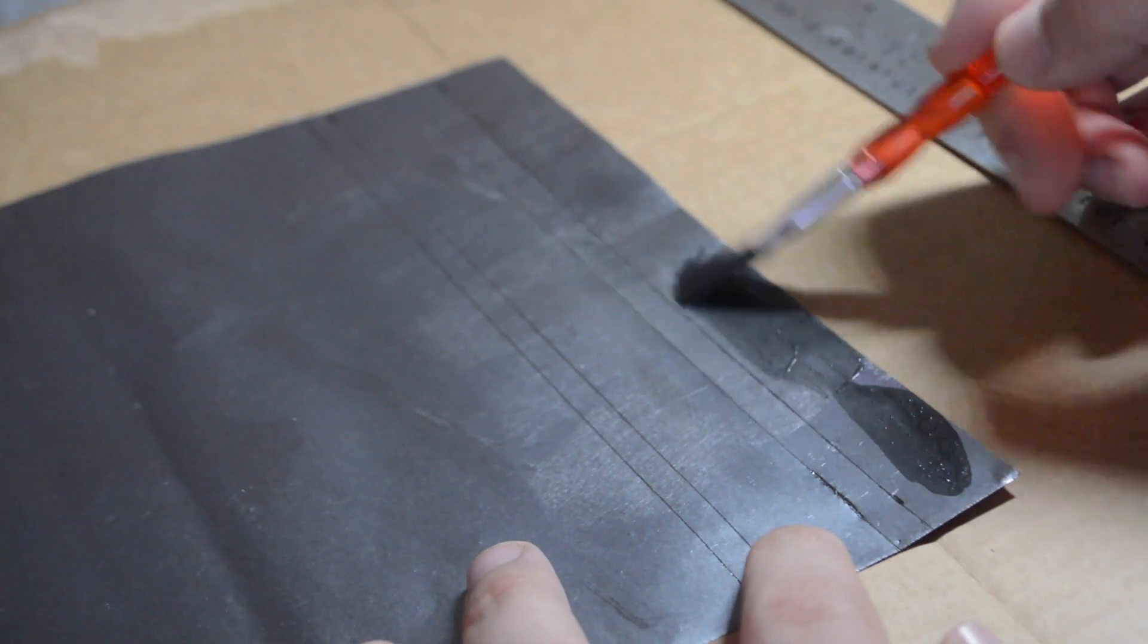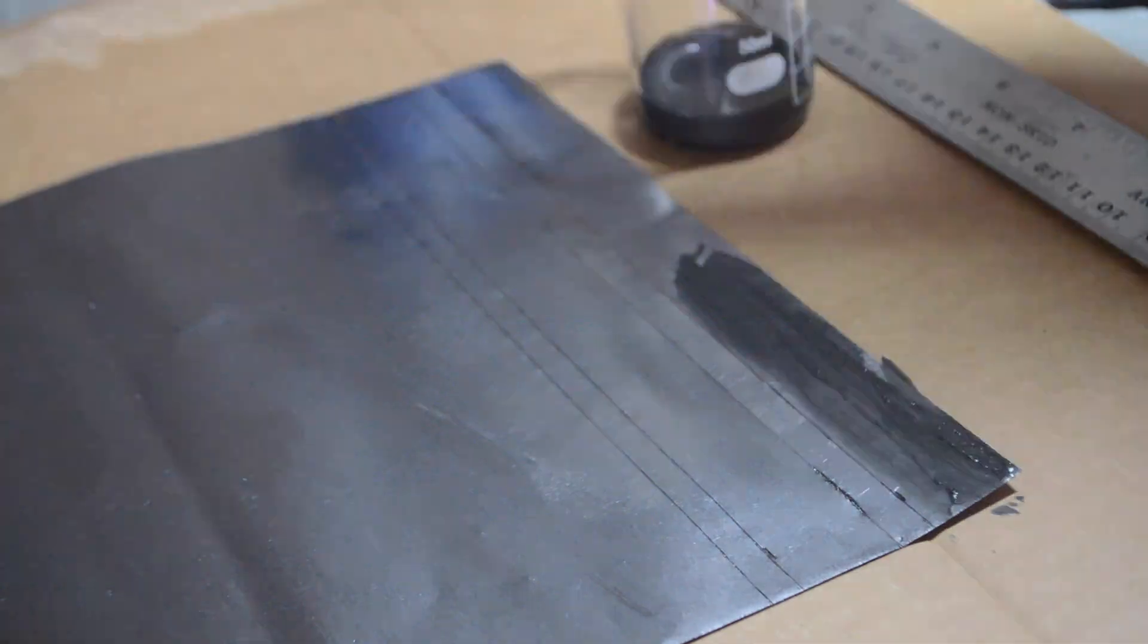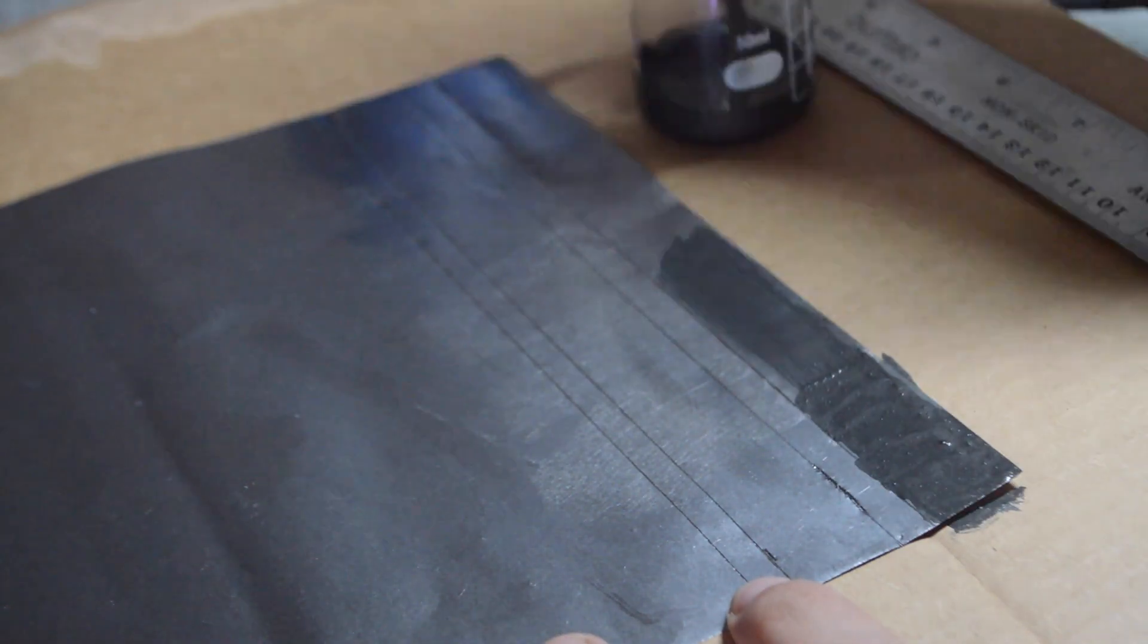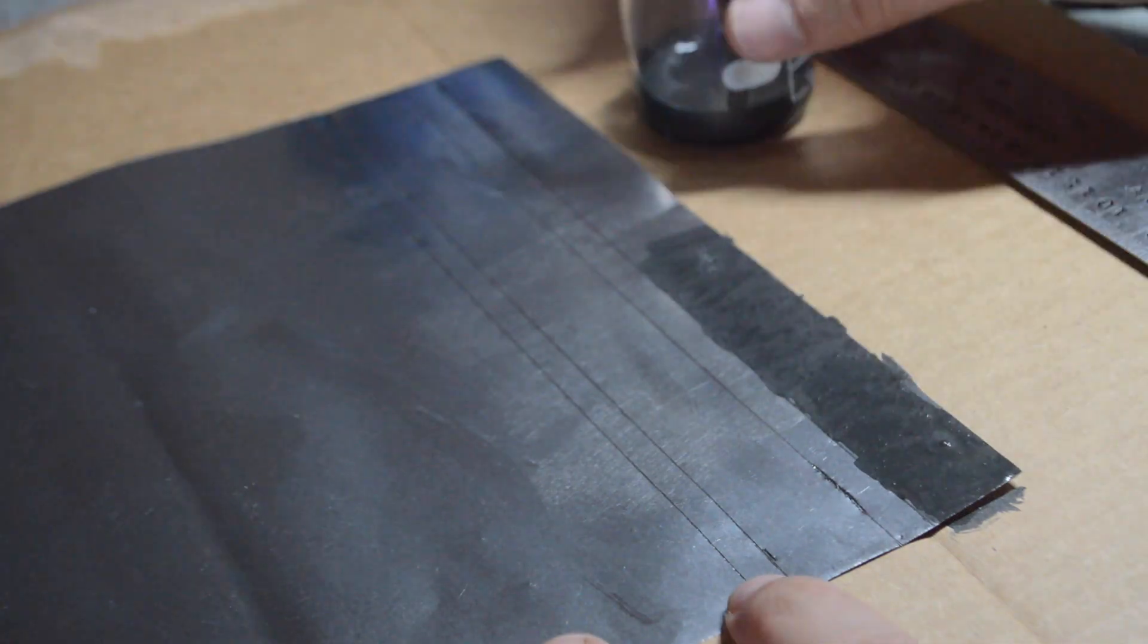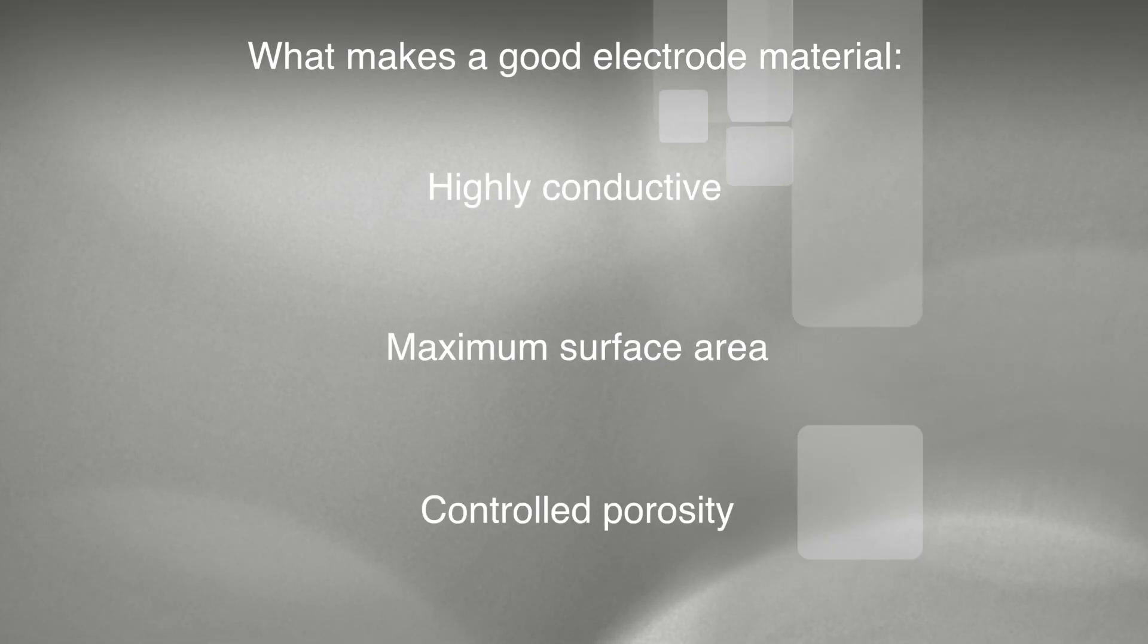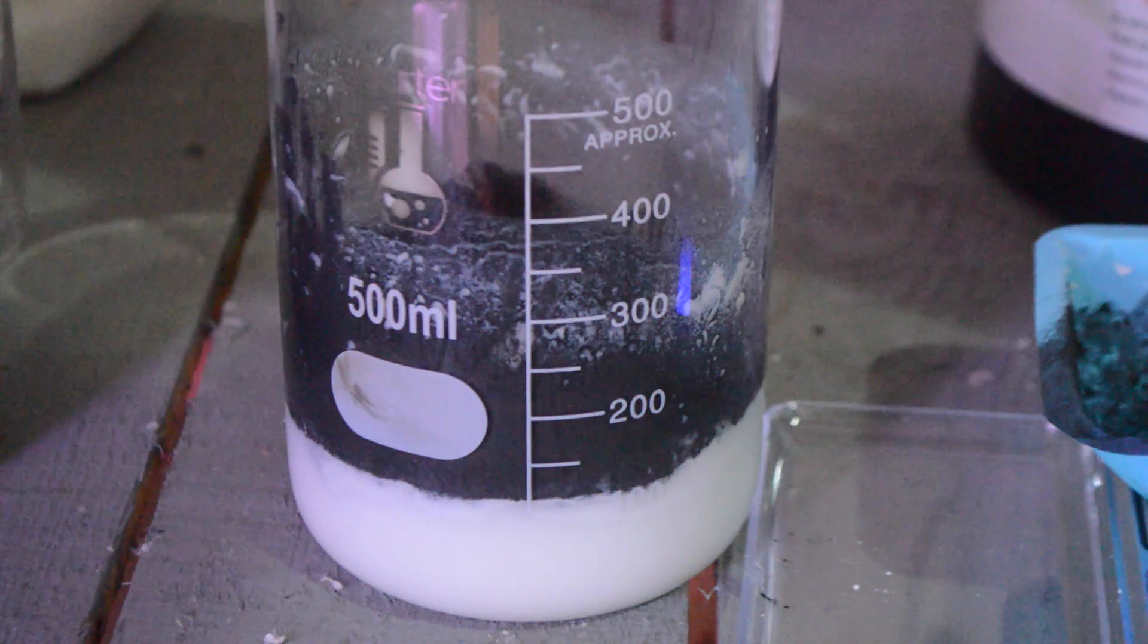Now we need to coat our plates with our electrode material. To keep things simple, we'll be using ordinary graphite powder for this, though there's lots of things that can and probably should be used in its place. Activated carbons are by far the most common, though graphene and the like are becoming more popular. The main thing to keep in mind is you want a material that's highly conductive, has as high a surface area as physically possible, and controlled porosity to allow the ions to move around at just the right rate.